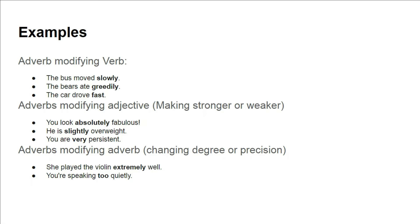Now look at examples where adverbs are modifying adjectives — these adverbs make adjectives stronger or weaker. 'You look absolutely fabulous' — fabulous is an adjective and absolutely makes it stronger. 'He is slightly overweight' — slightly is an adverb linked with the adjective overweight. 'You are very persistent' — very is an adverb making the adjective persistent stronger.